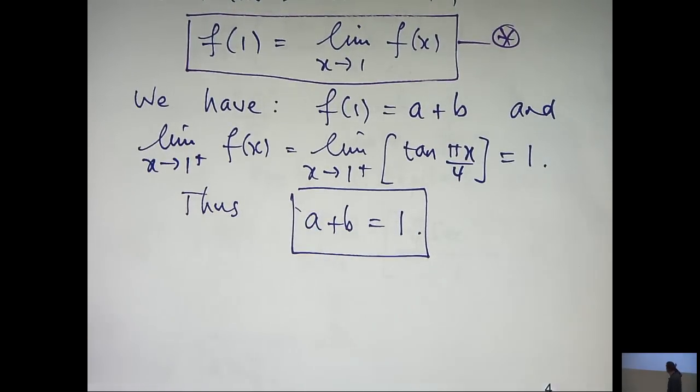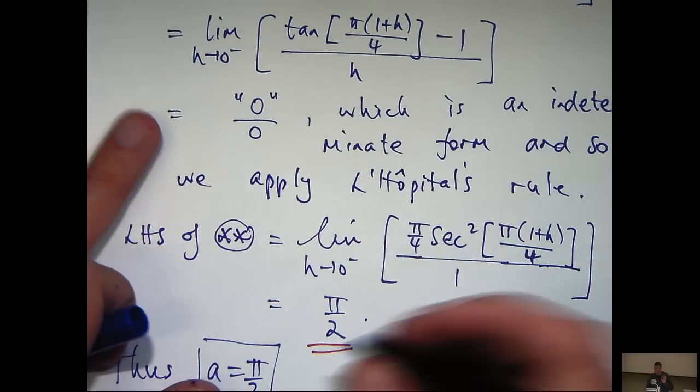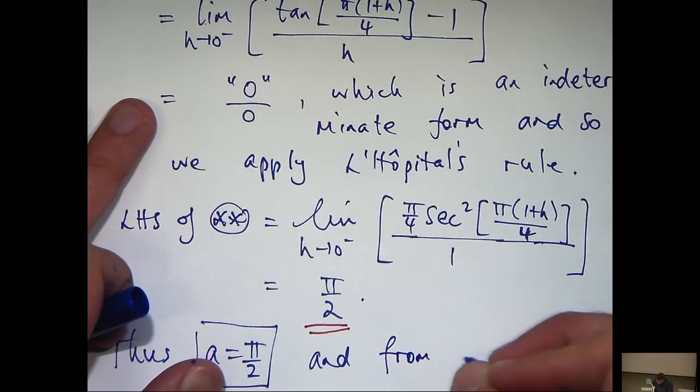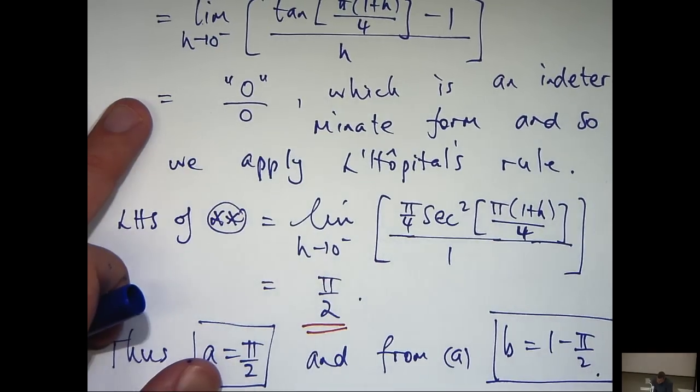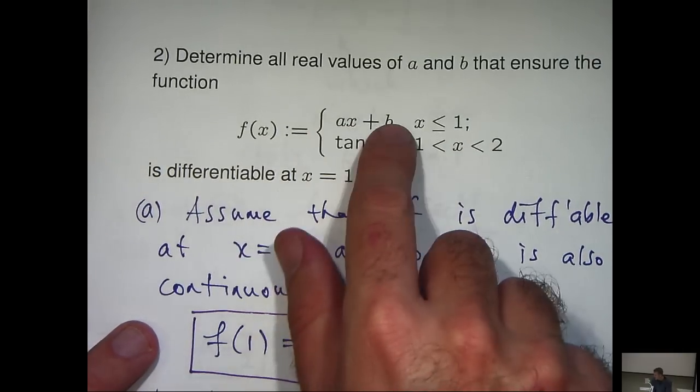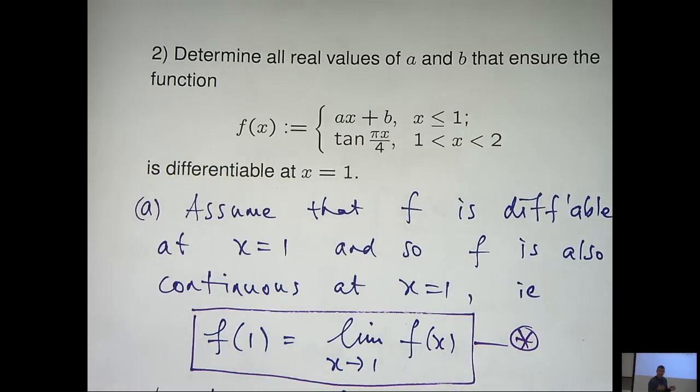Well, if a equals π on 2, b must equal 1 minus π on 2. So, we found both the values of a and b that forces f to be differentiable at x equals 1.